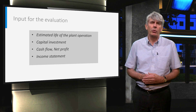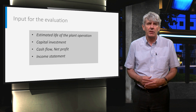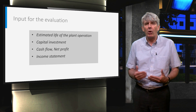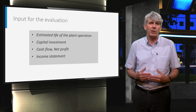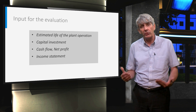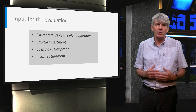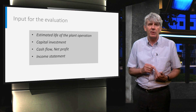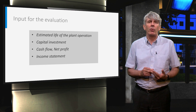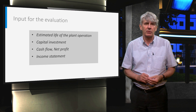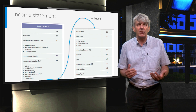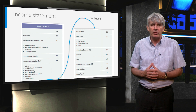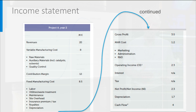The economic project evaluation model requires a set of data. Some come in by definition, like the estimated life of the plant operation, but most are delivered by estimating the capital investment level and the profit that can be made with the result of the project. The most important data are: estimated operation life of a plant, the capital investment estimated, the cash flow and the net profit foreseen, and finally the income statement. A somewhat simplified income statement for a project is given in the table, indicating which data are used in calculating IRR, PV, NPV, PBP, and ROI.